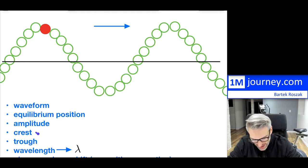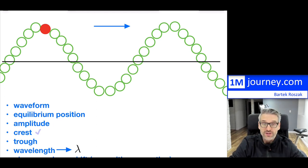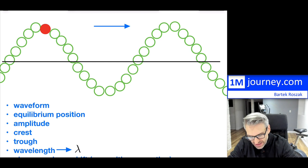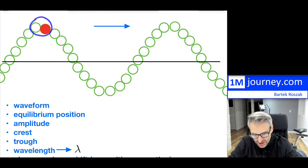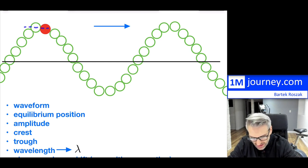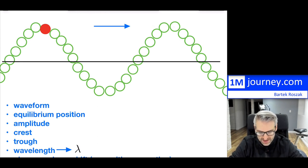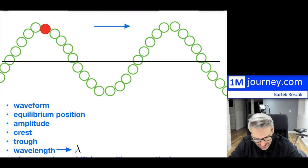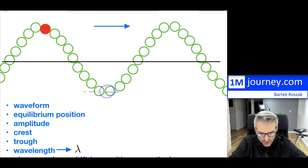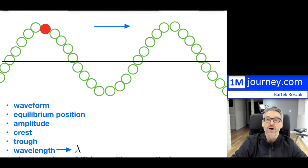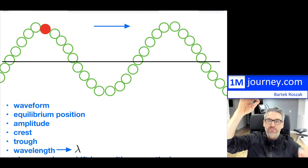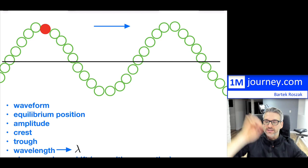The crest of the wave is the peak point — the highest point above equilibrium. Those would be the crests. The trough is at the bottom — all the way at the bottom of the wave. So crest is top, trough is at the bottom.